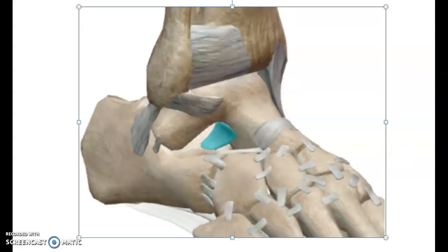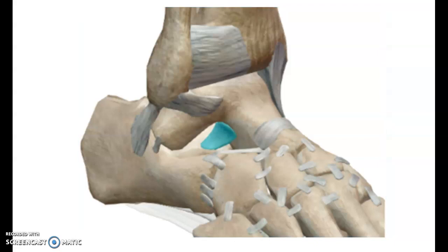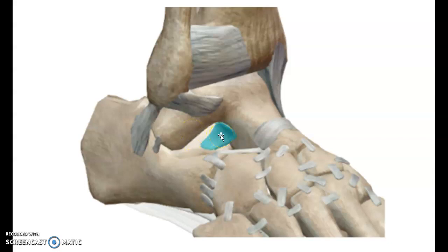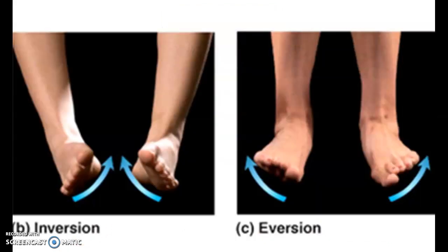We also have one more ligament — the interosseous talo-calcaneal ligament — which also binds the talus and calcaneus together. This interosseous talo-calcaneal ligament lies within the sinus tarsi (also pronounced 'sinus tarsi'). This is a small cavity called the sinus tarsi, and the ligament that lies here is called the interosseous talo-calcaneal ligament.